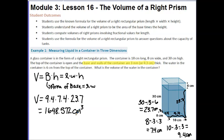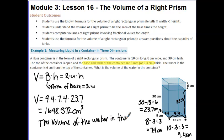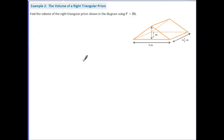Since this is a word problem, let's end with a word answer: the volume of the water in the container is 1,648.572 centimeters cubed. Now let's look at another volume problem in Example 2, this time with a right triangular prism.